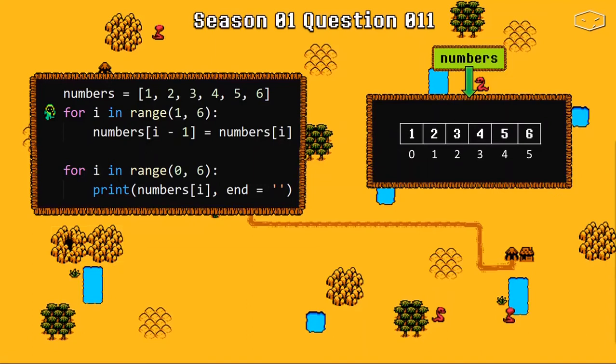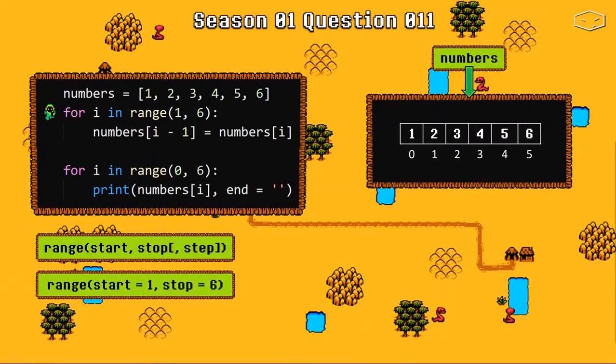Remember from question number 5? A range has a start, a stop, and a step. In this case the start equals 1, the stop equals 6, and the default value for step is 1.